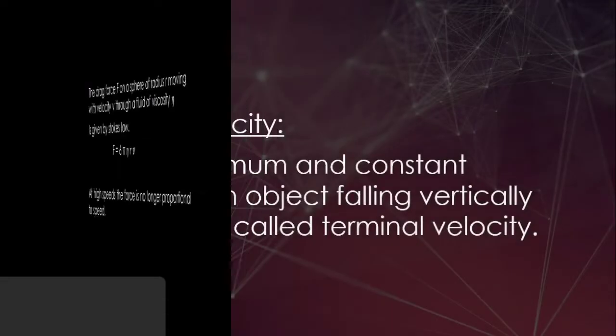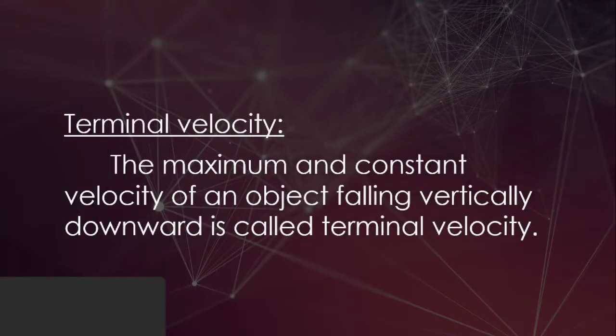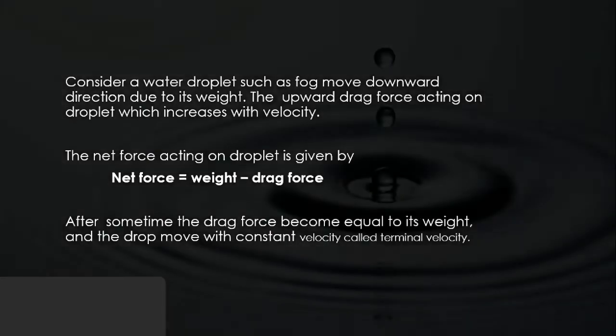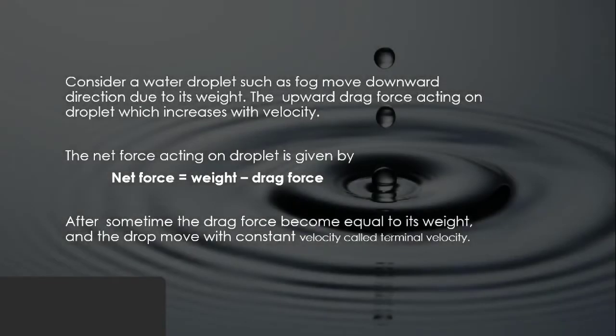The maximum and constant velocity of an object falling vertically downward is called terminal velocity. Consider a water droplet such as fog moving in a downward direction due to its weight. The upward drag force acting on the droplet increases with velocity.